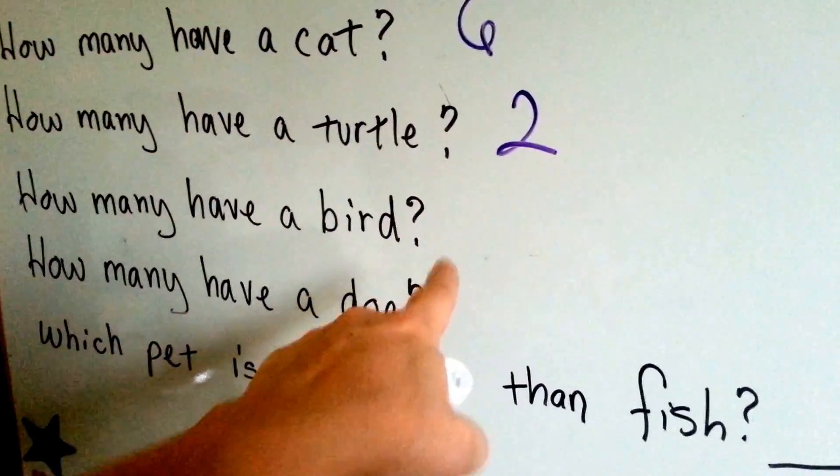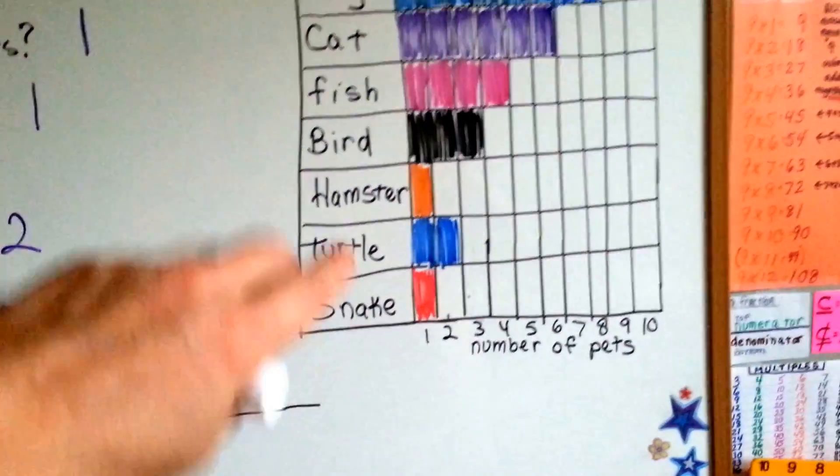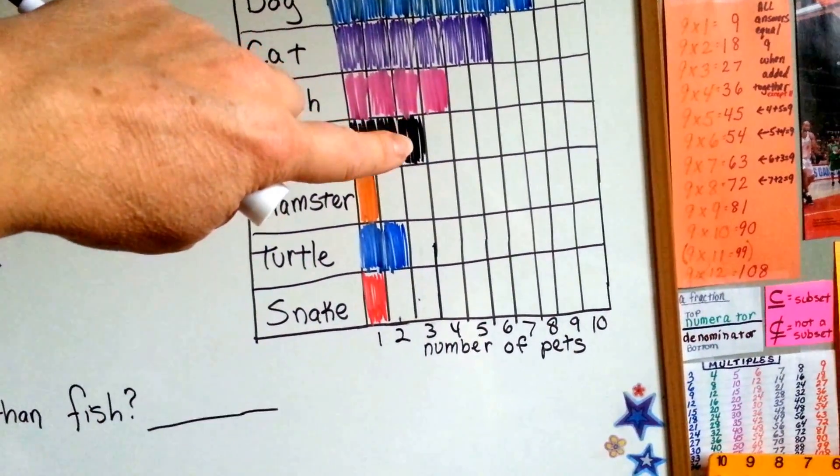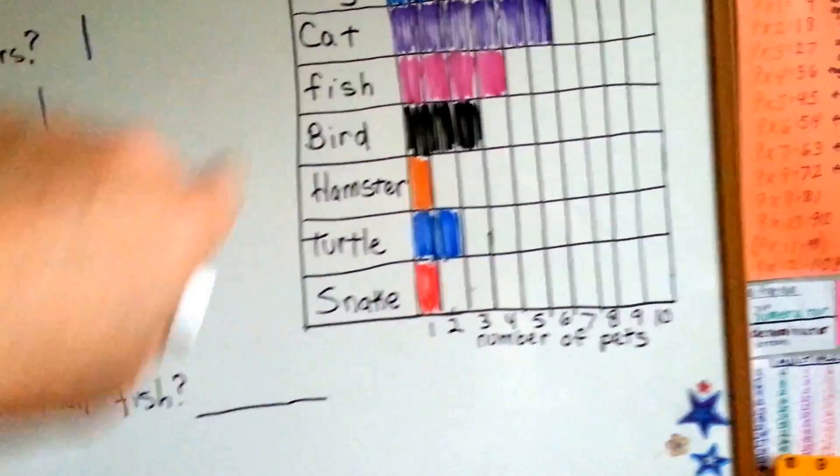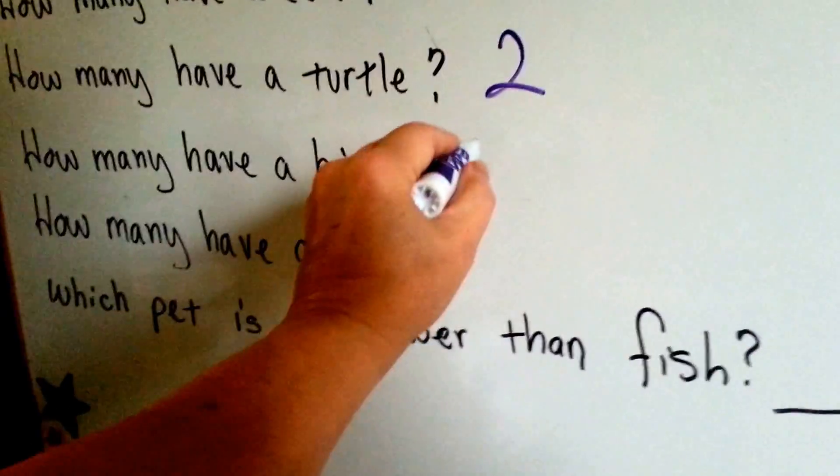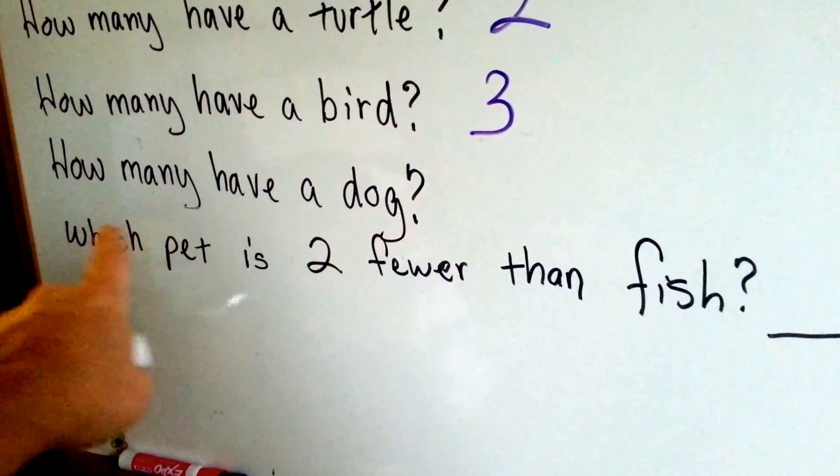How many have a bird? You go to the end of the bar and you go down and you see that three boxes are filled. Three bird pets. Three students have a bird for a pet.